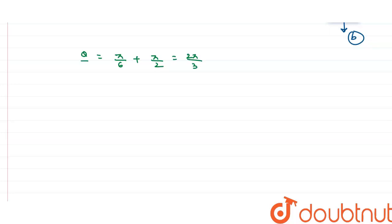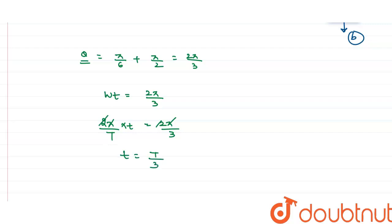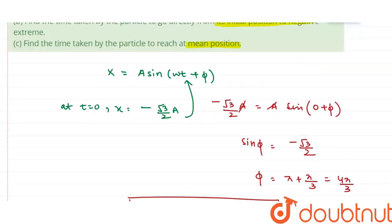This total angular travel equals ωt, so ωt equals 2π/3. Since ω equals 2π/T, substituting gives (2π/T)·t equals 2π/3. The 2π cancels out, giving t equals T/3. This is the time taken by the particle to reach the mean position. This is the answer to part C, equal to T/3.